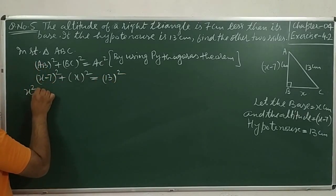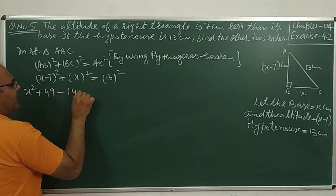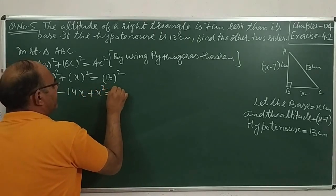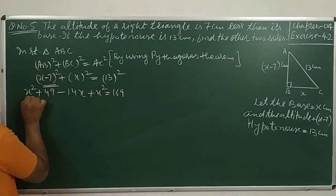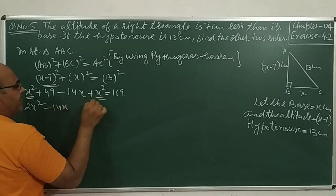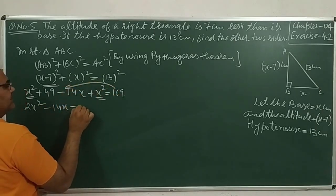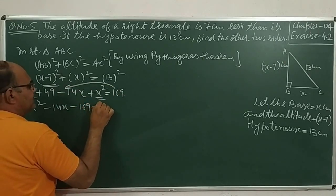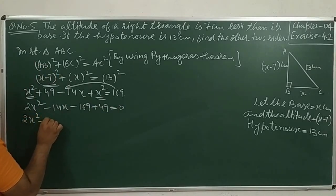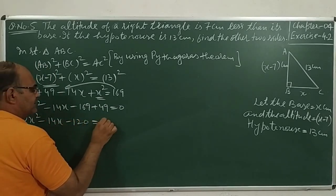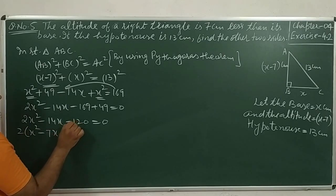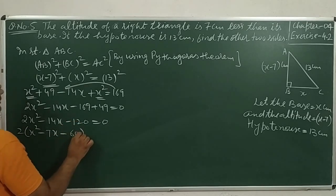Solve this now. x square plus 49 minus 14x — using the formula for the whole square of a minus b — plus x square is equal to 169. So 2x square minus 14x, and 169 minus 49 gives us 2x square minus 14x minus 120 is equal to 0. Taking 2 as common, x square minus 7x minus 60 is equal to 0.